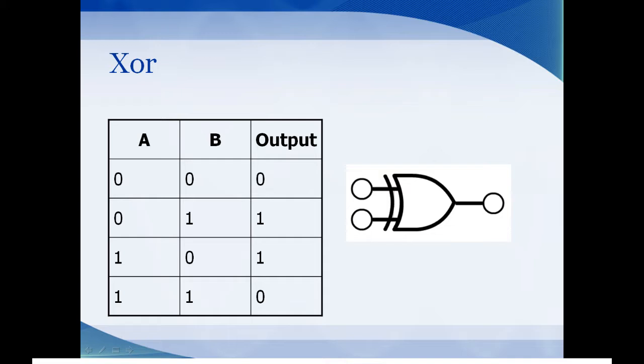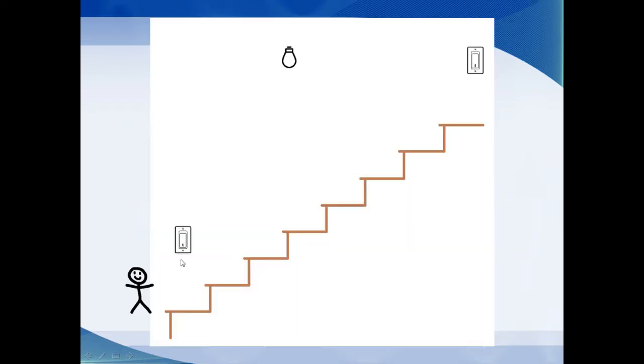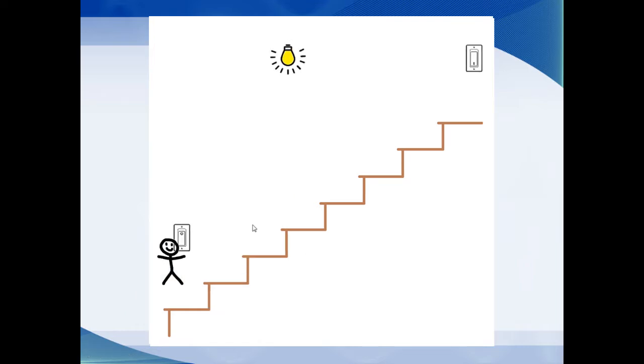Now the XOR gate stands for exclusive OR. The symbol for it looks like the OR statement, only it has an extra little line there that means exclusive. So the easiest way to remember the XOR gate is to think of a staircase. There's a light switch at the bottom of the stairs and there's a light switch at the top of the stairs. When you first get to the stairway, the light is off and both switches are off. So I'm going to go, he's going to turn the light on. There we go. He turned the light switch on. This is a 1, it's on and it turned the light on.